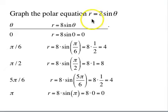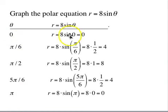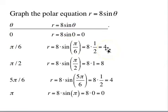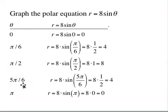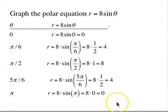The next question is to graph r = 8·sin θ. Choosing 5 values: at θ=0, sin 0=0 so r=0. At θ=π/6, sin(π/6)=1/2 so r=4. At θ=π/2, sin(π/2)=1 so r=8. At θ=5π/6 in quadrant 2, sine is still 1/2 so r=4 again. At θ=π, sin π=0 so r=0. That gives us 5 points to see what the graph looks like.